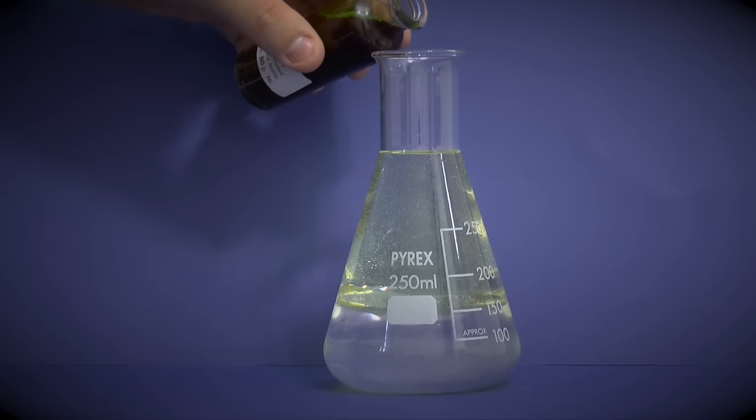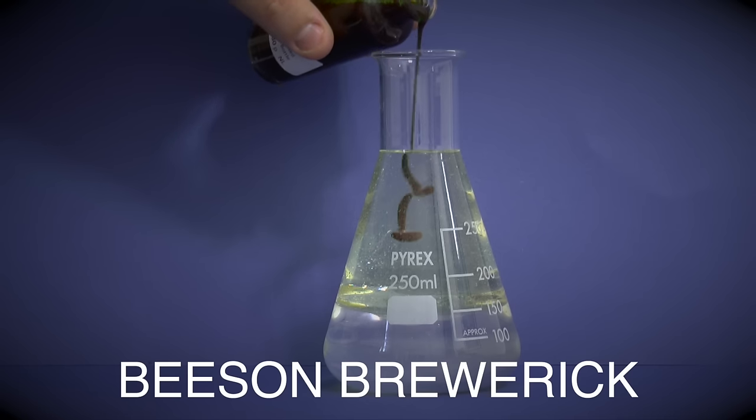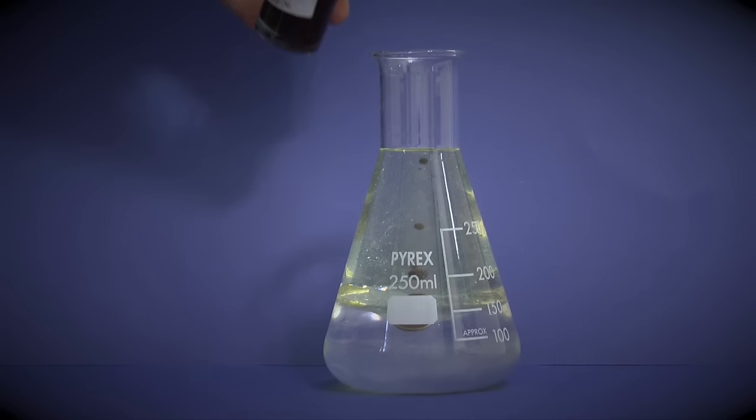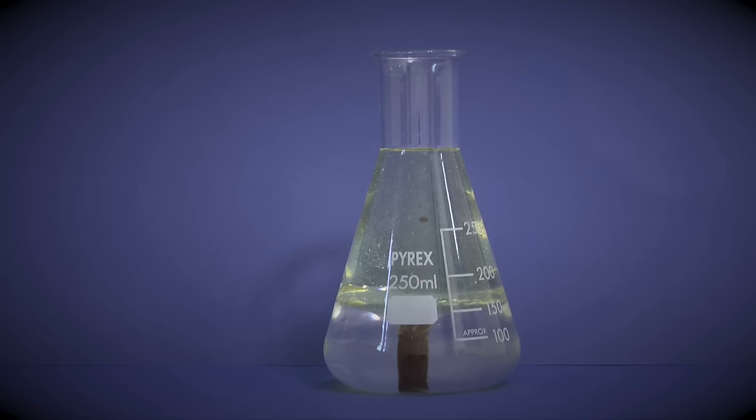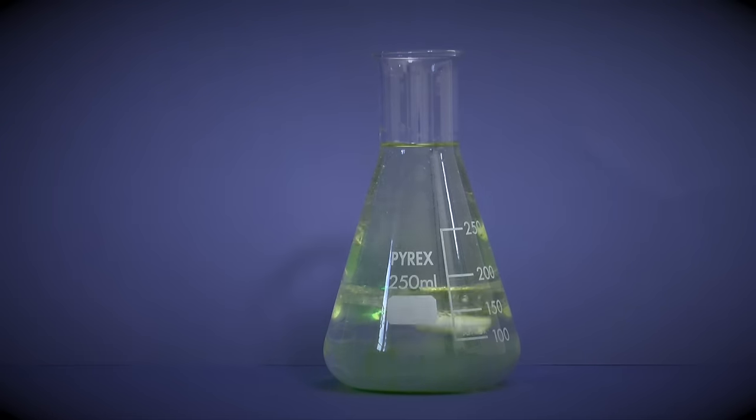Next drip a couple of drops of Beeson's breweric into the glass. This is a gravity defying sentient juice, extracted from the male manatee. Then when you're ready and not feeling too tired, drop in a clave capsule.